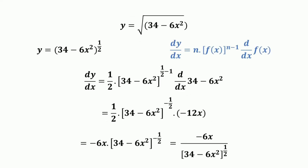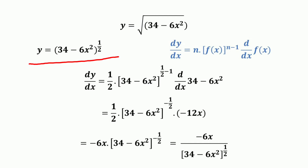Consider another example: the given function y is equal to the square root of (34 minus 6x²). This radical function can be converted into a power function, so it becomes y equals (34 minus 6x²) raised to the power 1/2.